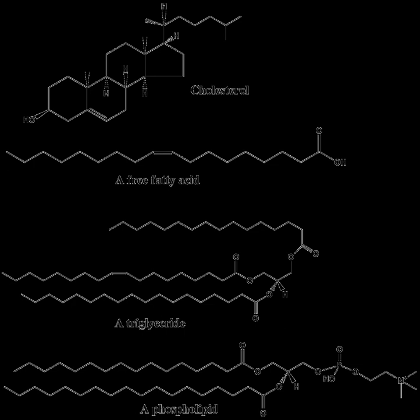Prenyl lipids are synthesized from the 5-carbon unit precursors isopentenyl diphosphate and dimethylallyl diphosphate, produced mainly via the mevalonic acid pathway. The simple isoprenoids — linear alcohols, diphosphates, etc. — are formed by the successive addition of C5 units and are classified according to the number of these terpene units. Structures containing greater than 40 carbons are known as polyterpenes. Carotenoids are important simple isoprenoids that function as antioxidants and as precursors of vitamin A. Another biologically important class of molecules is exemplified by the quinones and hydroquinones, which contain an isoprenoid tail attached to a quinonoid core of non-isoprenoid origin. Vitamin E and vitamin K, as well as the ubiquinones, are examples of this class. Prokaryotes synthesize polyprenols in which the terminal isoprenoid unit attached to oxygen remains unsaturated, whereas in animal polyprenols the terminal isoprenoid is reduced.